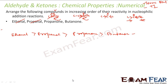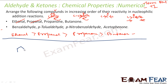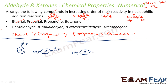The next problem: arrange benzaldehyde, para-tolualdehyde, para-nitrobenzaldehyde, and acetophenone in order of nucleophilic addition reactivity. Let me draw the structures: benzaldehyde is a benzene ring with a CHO group; para-tolualdehyde has a methyl group at the para position and a CHO group; para-nitrobenzaldehyde has a nitro group at the para position and a CHO group; acetophenone has a benzene ring with a COCH3 group.